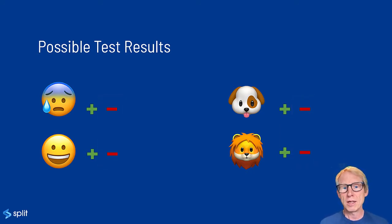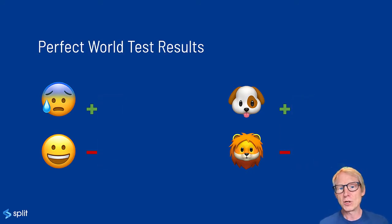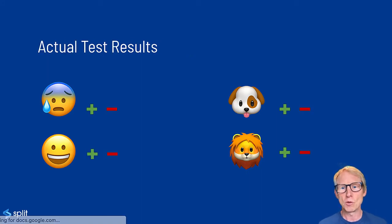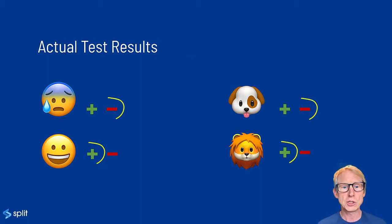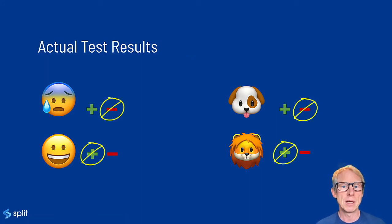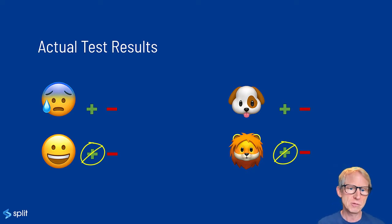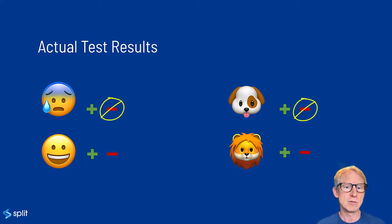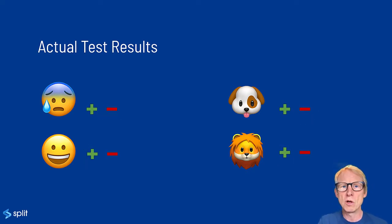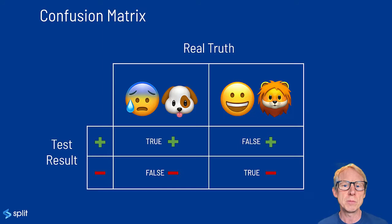In a perfect world, your test would always be accurate, but in the real world, the test could be getting it wrong some of the time, and that's where false positives and false negatives come in. Let's draw what's known as a confusion matrix to see the possible outcomes.